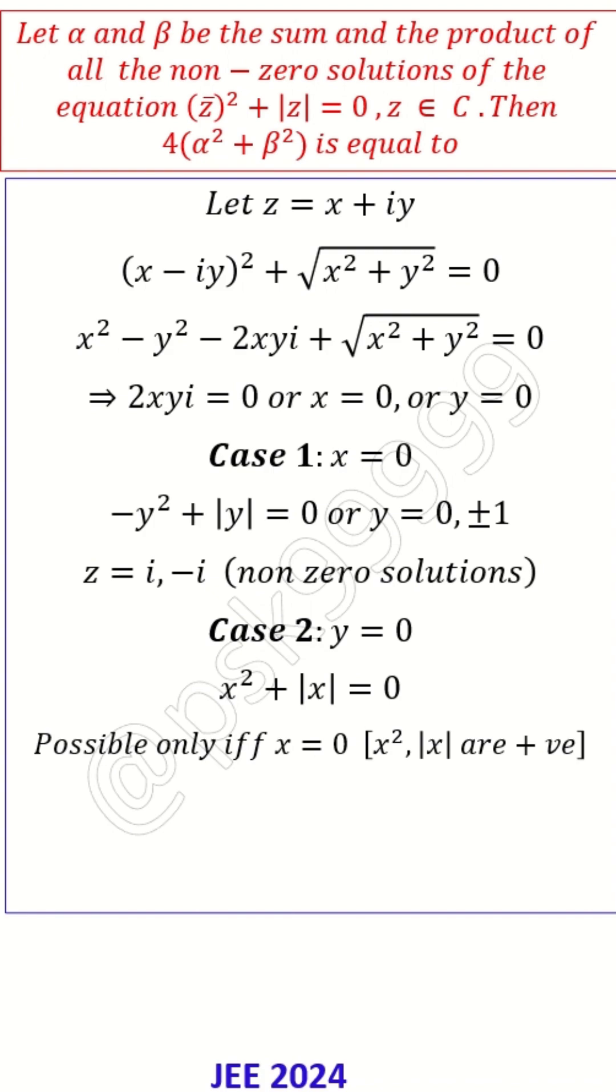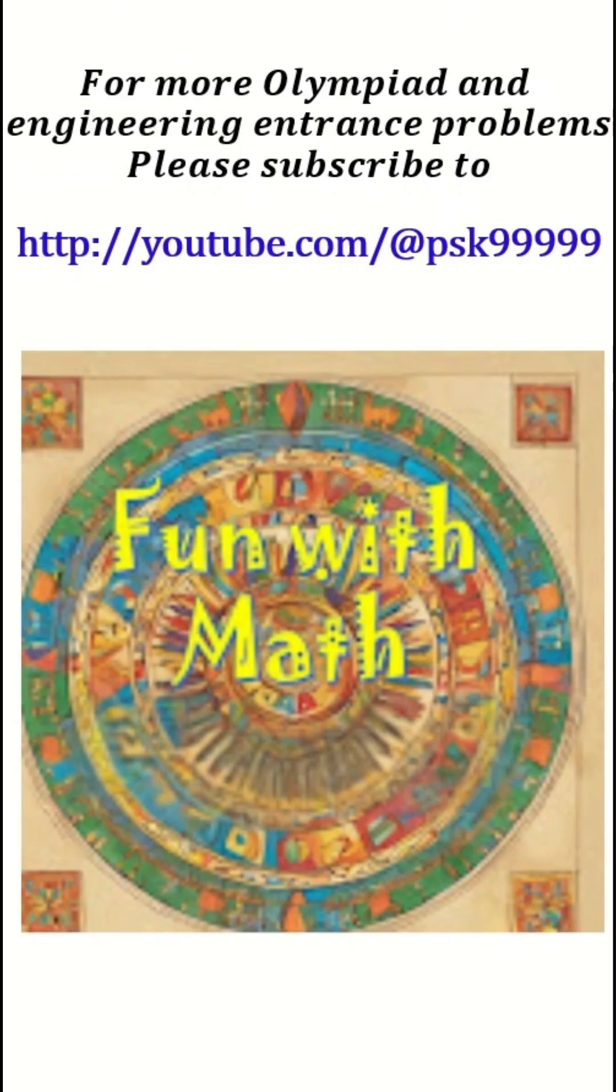So now alpha is sum and beta is product. So α = i + (-i) = 0, β = i × (-i) = 1. So 4(α² + β²) = 4 × (0 + 1) = 4. That is the answer. Thank you, please like and subscribe to our channel.